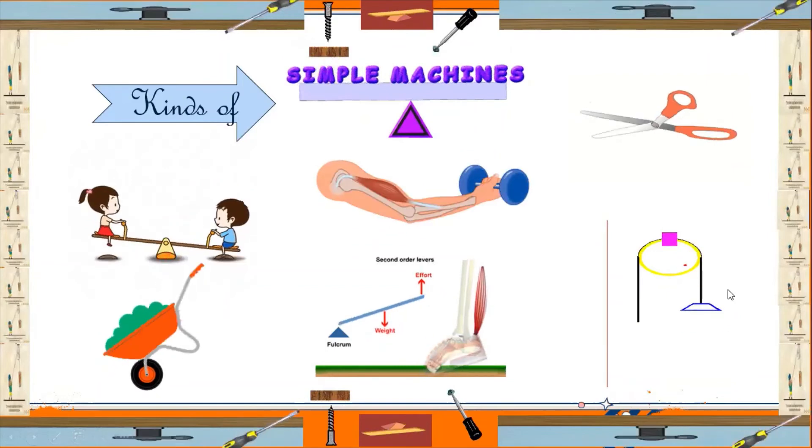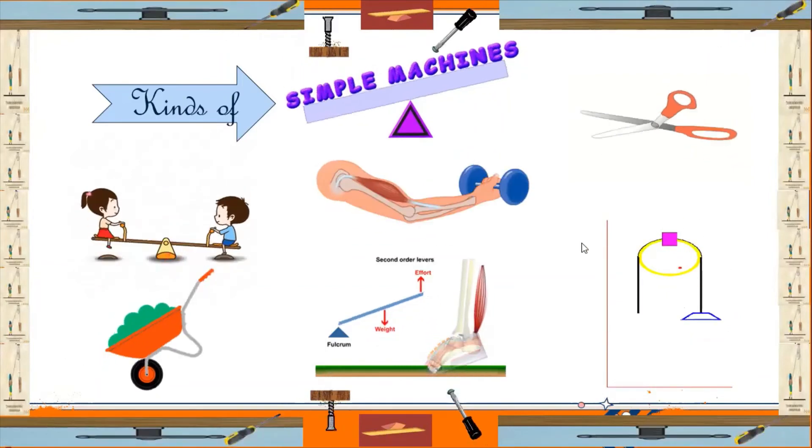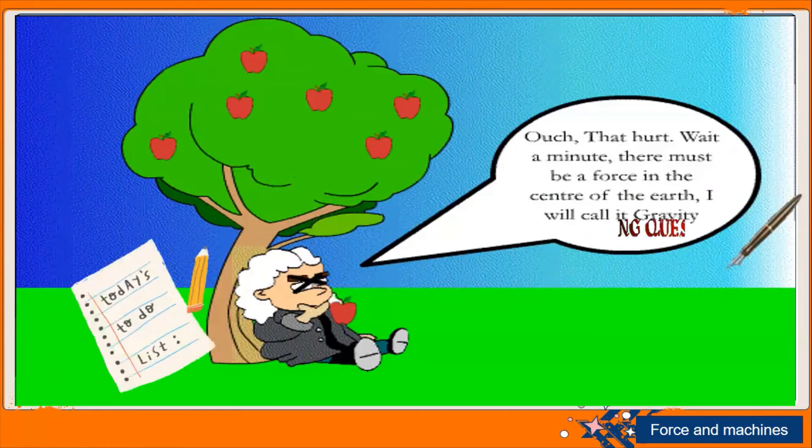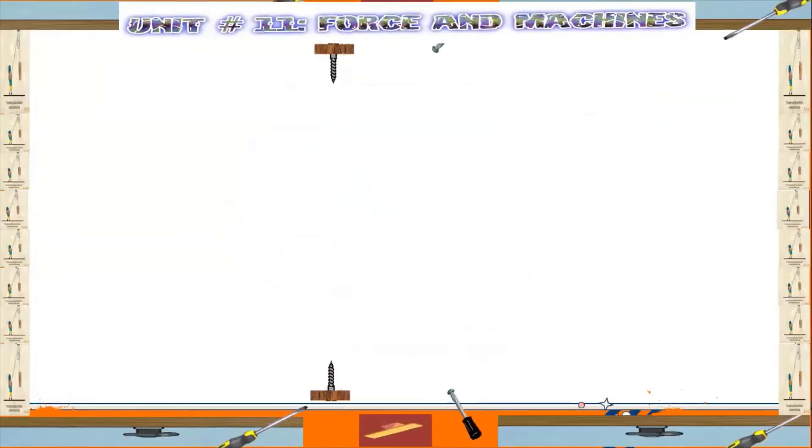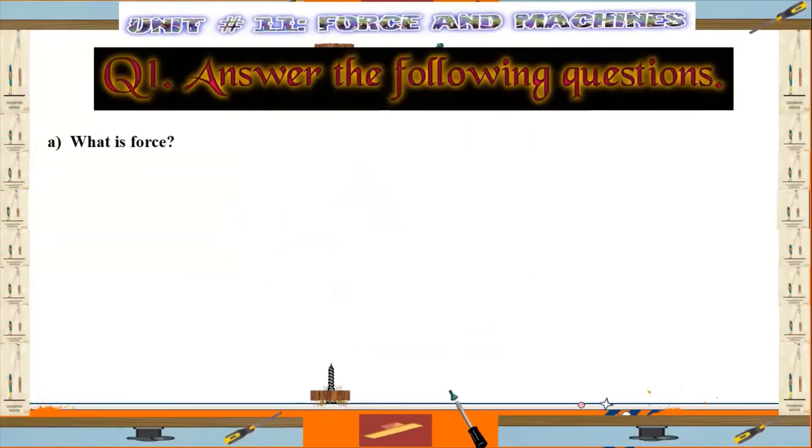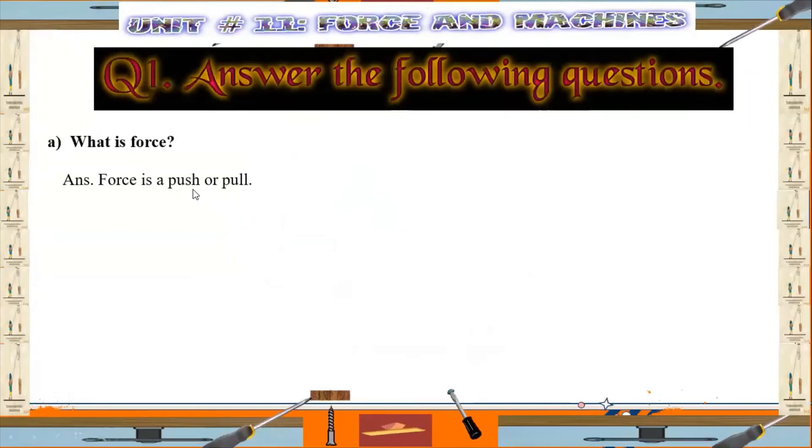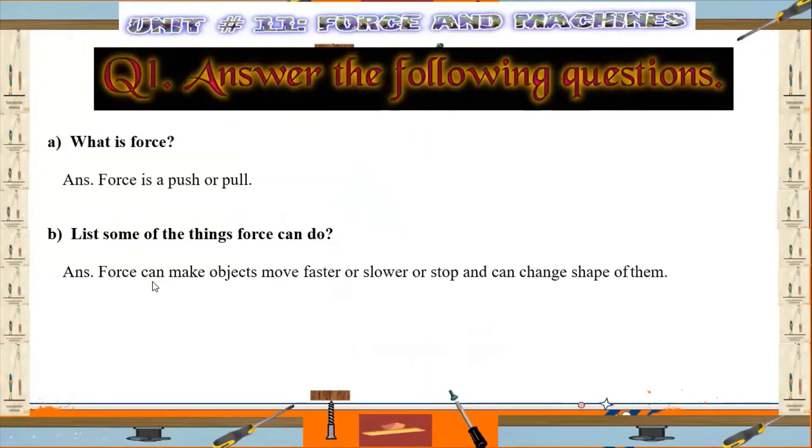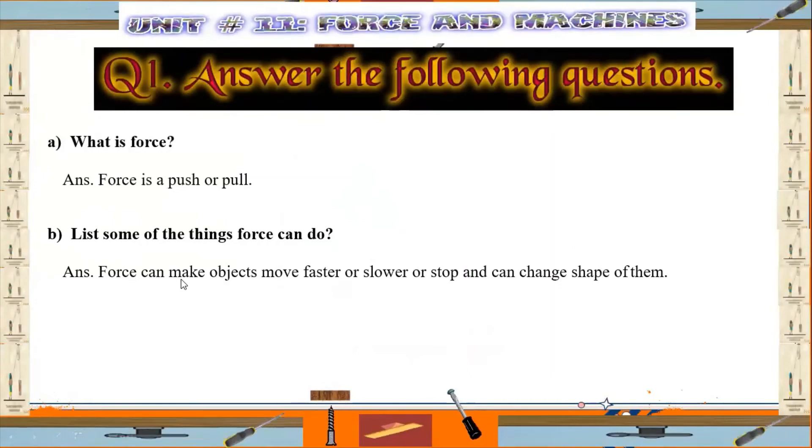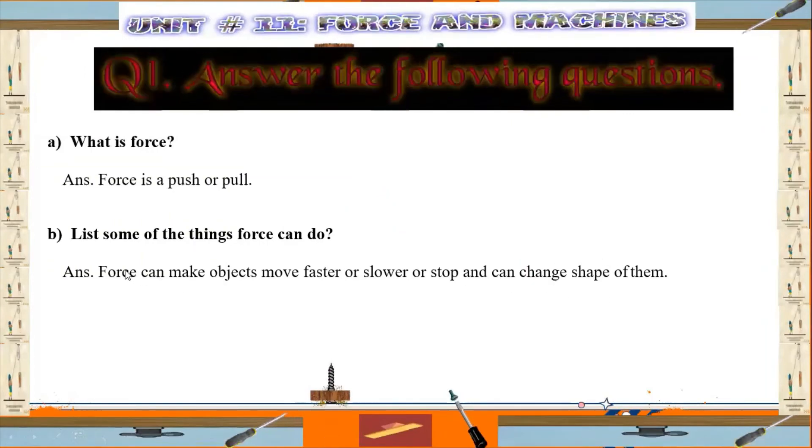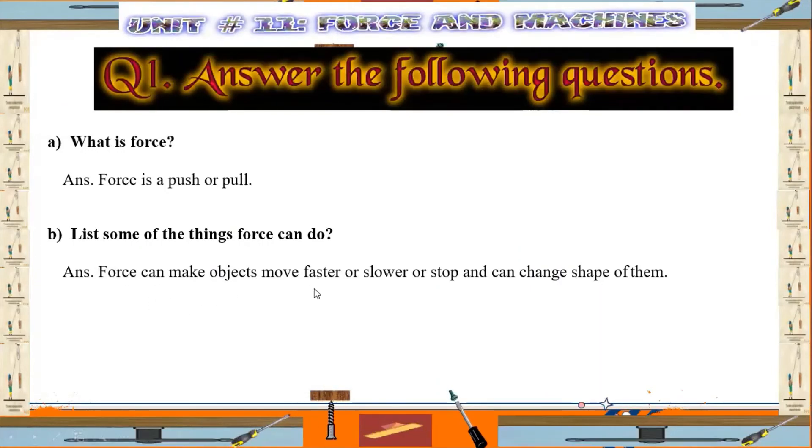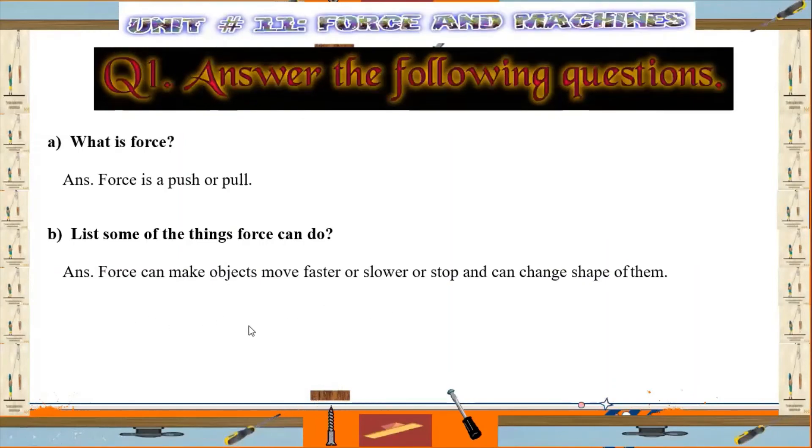So that will be all for today's lesson, students. Now we come to today's work - answer the following questions. Question number one, part A: What is force? Force is a push or pull. List some of the things force can do at home. Force can make objects move faster or slower or stop, and can change the shape of them. You can make it in list also: part one, force can make objects move faster; two, force can make objects move slower; force can stop objects; and force can change the shape of them.